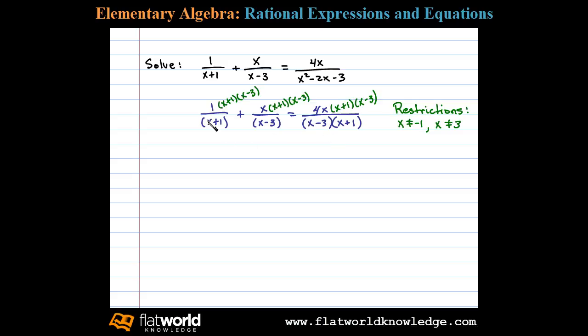In this case we can see x plus 1 will cancel and we'll be left with x minus 3 plus, here x minus 3 will cancel leaving us with x times x plus 1 equals, x minus 3 cancels and x plus 1 cancels leaving us with 4x.